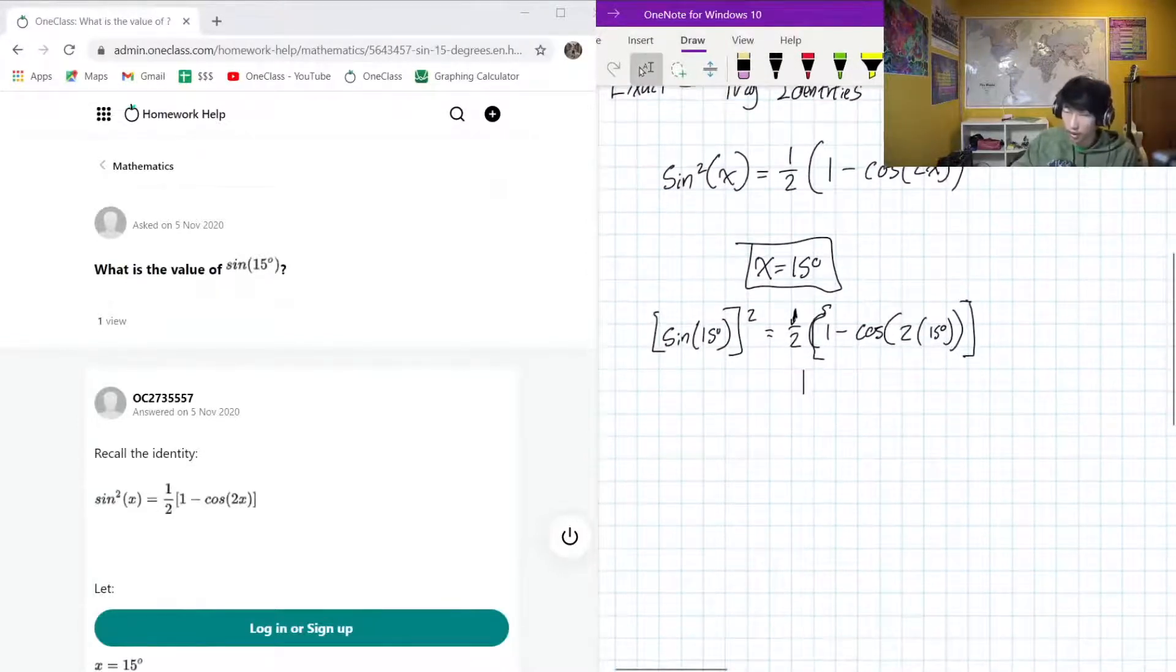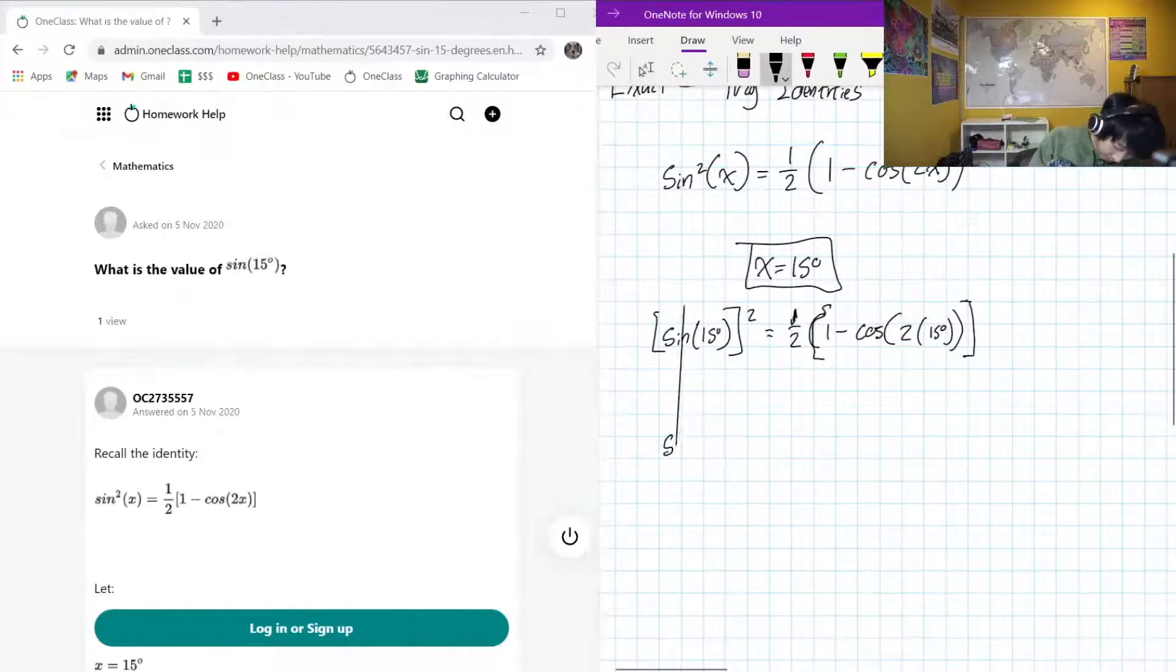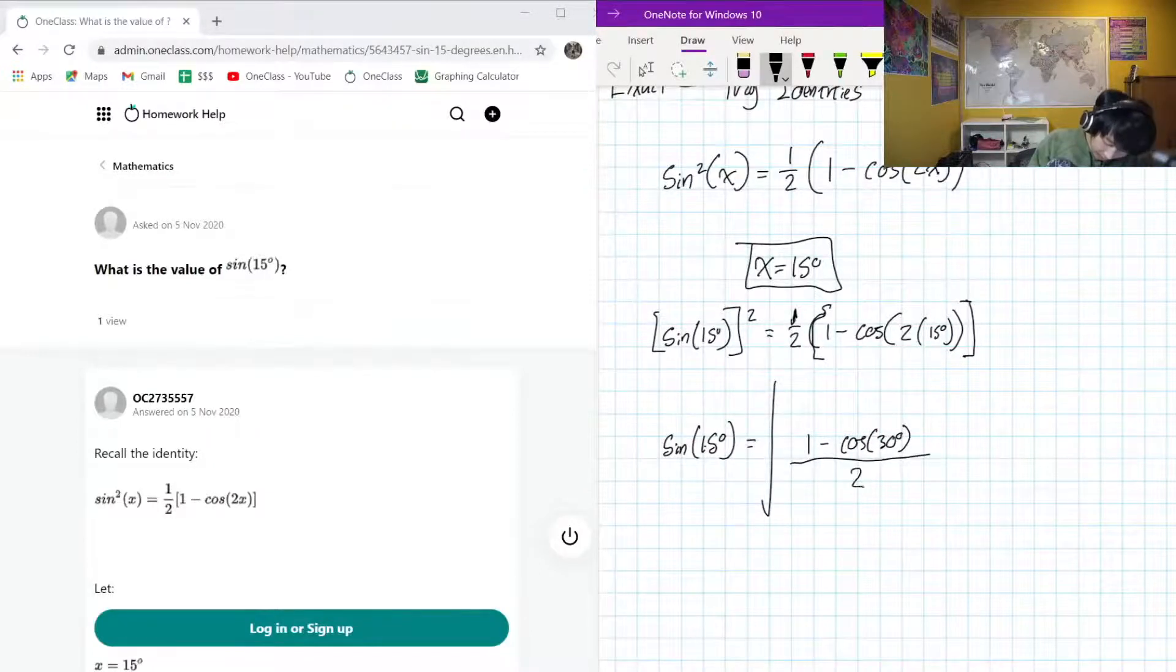Okay, so, simplifying this even further, if we're going to isolate sine 15 degrees, we've got to take the square root of the whole right side, so this will be 1 minus cos 30 degrees because that's 2 times 15 over 2. That's just another way of rewriting it.